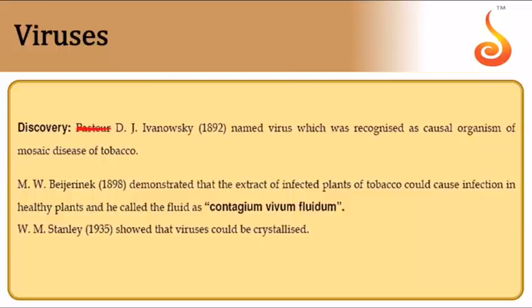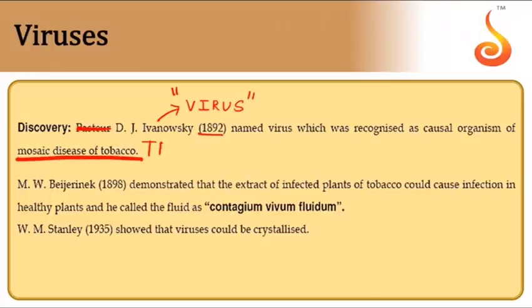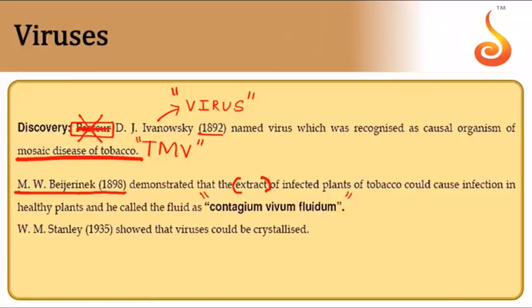Regarding viruses: D.J. Iwanowski first used the word 'virus' and in 1892 recognized the causative agent of mosaic disease in tobacco — the Tobacco Mosaic Virus (TMV). M.W. Beijerinck in 1898 called viruses a contagious venomous fluid (contagium vivum fluidum) after collecting extract from infected tobacco mosaic plants. In 1935, W.M. Stanley showed that viruses have a particulate nature and can be crystallized.